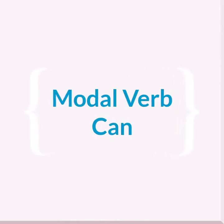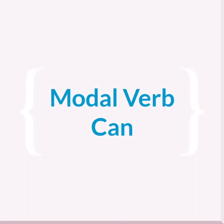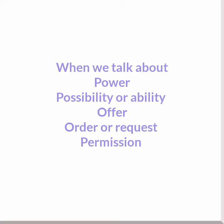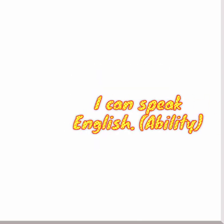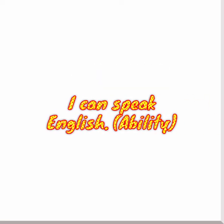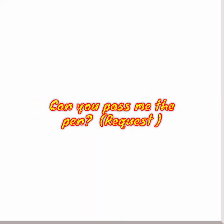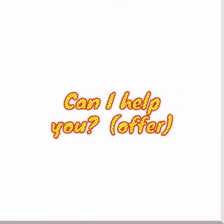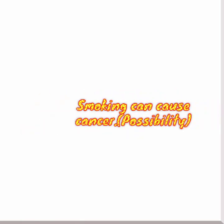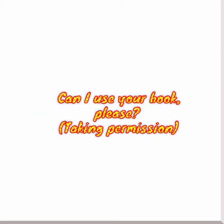Hello everyone, today we will be studying modal verb 'can'. This modal verb is used in different situations or circumstances, for example when we talk about power, possibility, or ability, offer, order, request, or permission. For example, if I say 'I can speak English', this is an ability. If I say 'Can you pass me the pen?', this is a request. If I say 'Can I help you?', this is an offer. If I say 'Smoking can cause cancer', this is a possibility.